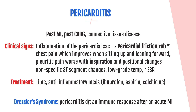Pericarditis generally occurs after myocardial infarction, after a CABG, or with connective tissue diseases. It is an inflammation of the pericardial sac surrounding the heart, which causes a pericardial friction rub on auscultation. There will be chest pain that improves sitting up and leaning forward, pleuritic pain worsening with inspiration, nonspecific ST segment changes, and potentially a low-grade fever. An elevated sed rate (ESR) — a measure of inflammatory activity — can also be seen. Treatment is anti-inflammatory medications such as ibuprofen, aspirin, and colchicine.